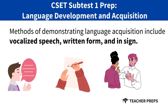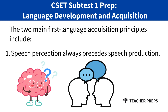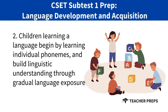Methods of demonstrating language acquisition can include vocalized speech, written form, and sign language. The two main first language acquisition principles are that speech perception always precedes speech production — meaning we first receive language before we produce it. Children learning a language begin by learning individual phonemes and build linguistic understanding through gradual language exposure.